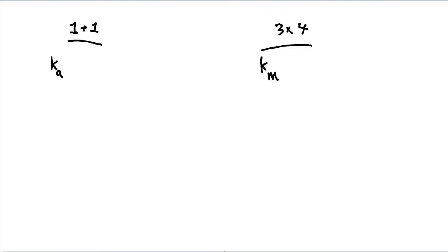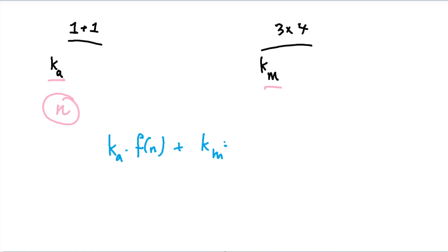That's easy when we just have basic operations. But when we start taking variables and data of size n and considering them, accounting for exactly how long it takes the computer to process all this information makes things much more complicated. We end up with some complex function that has k-sub-a times some f of n, plus k-sub-m times some g of n, possibly raised to a power if we use loops. Things get so complicated that we need some general notation that doesn't devolve into using different constants for every possible operation.